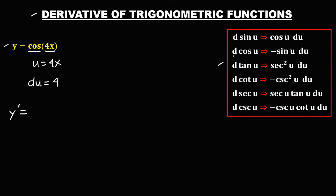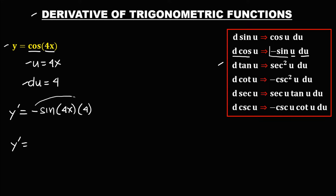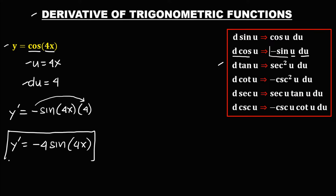Since we have cosine, and the derivative of cosine is negative sine, so we have negative sine u, and u is 4x, times the derivative of u which is 4. We need to write the constant first, so we have negative 4 sine 4x. This is now the derivative.